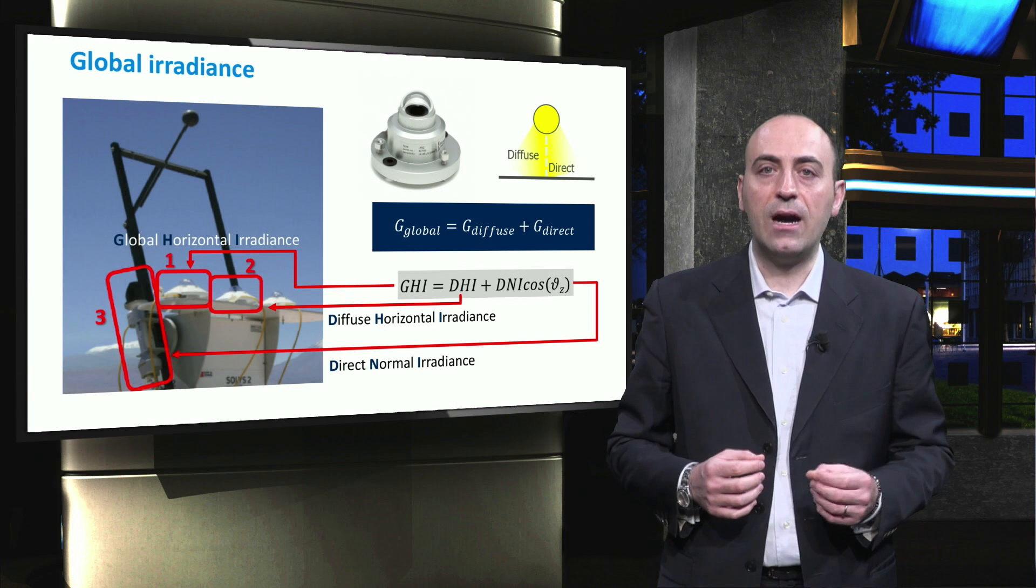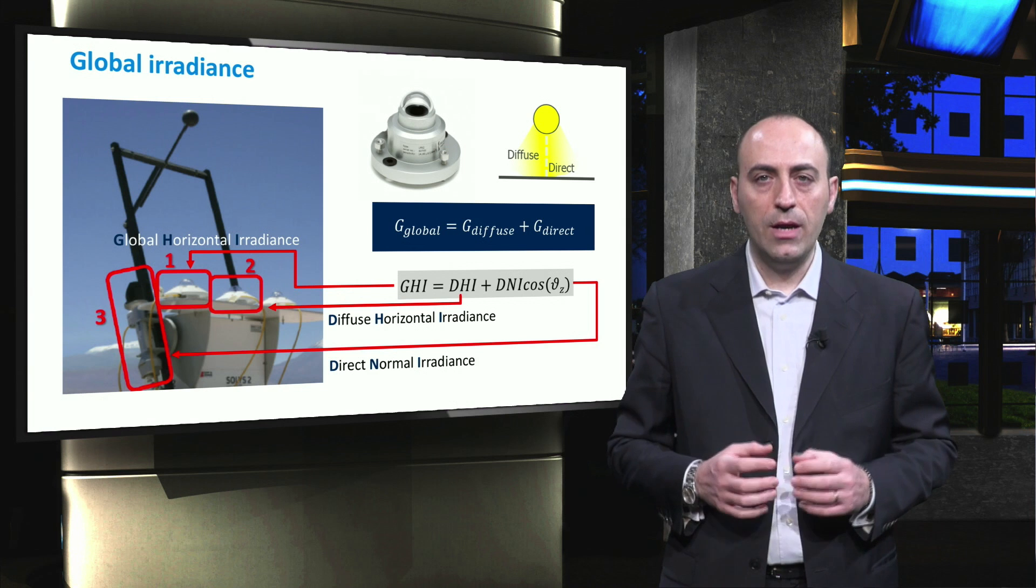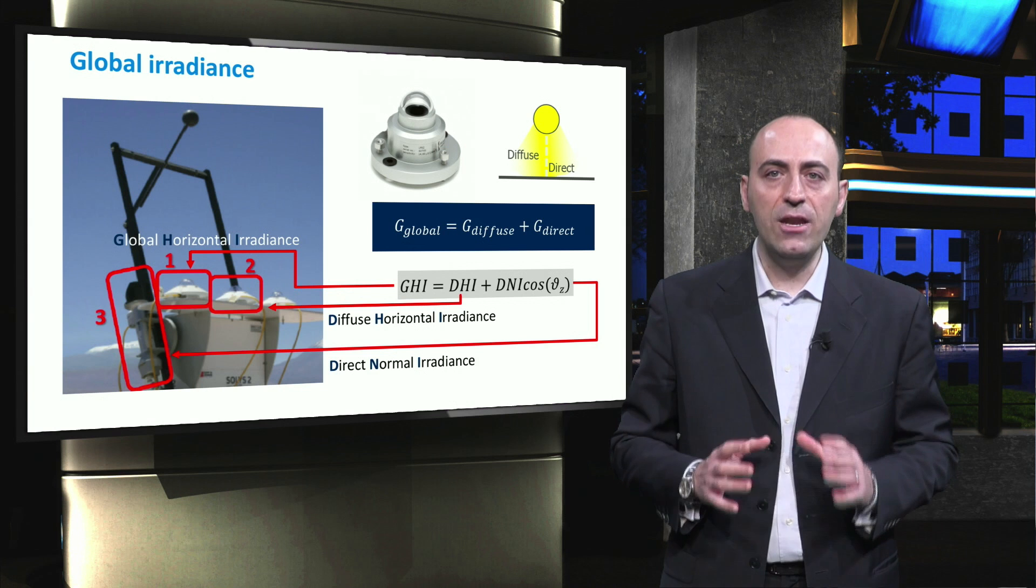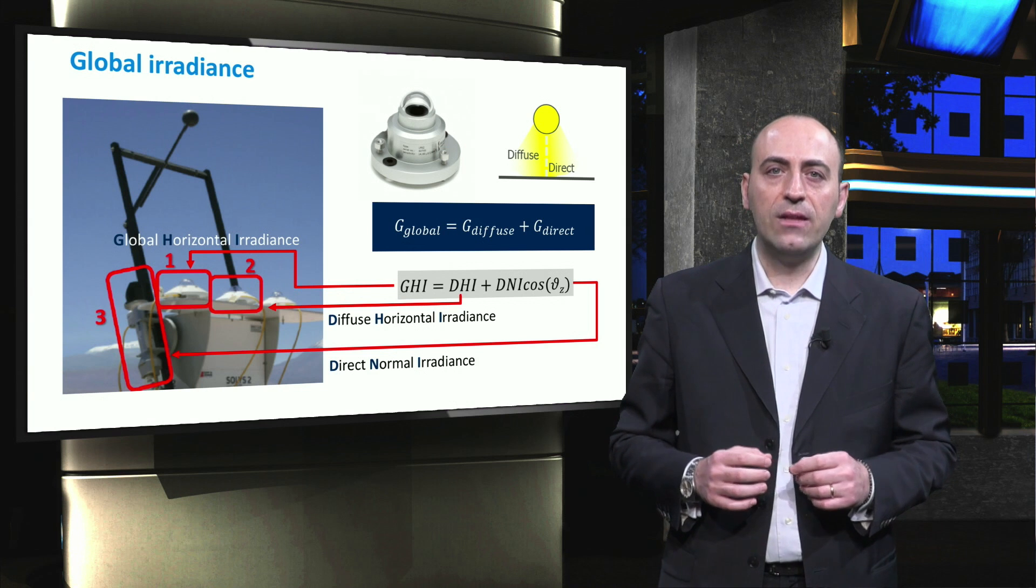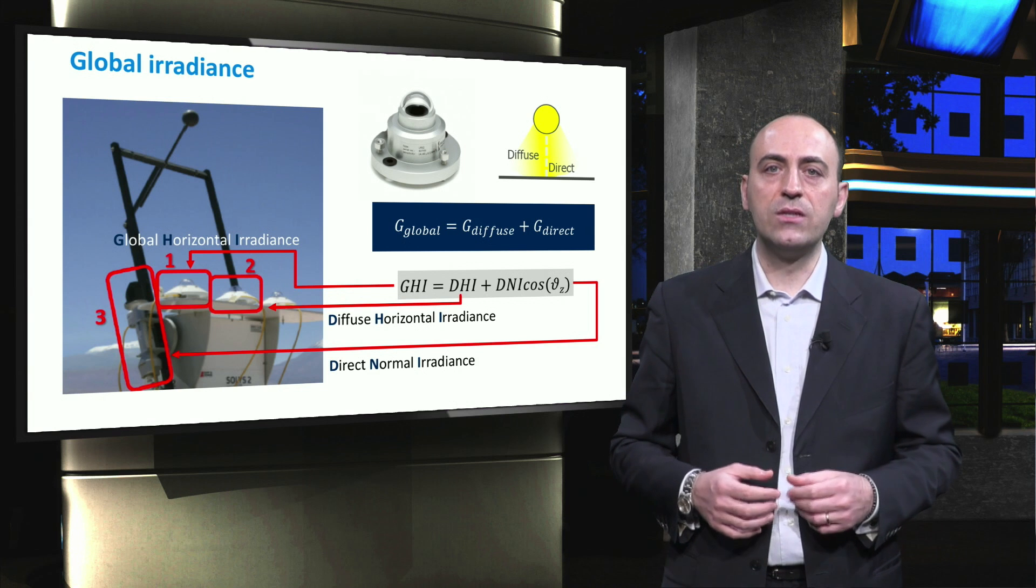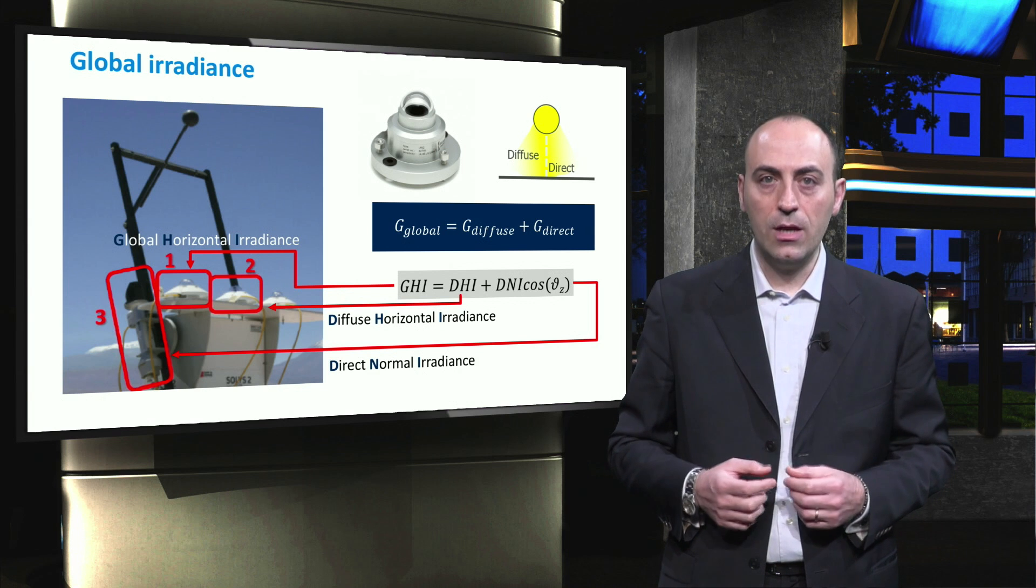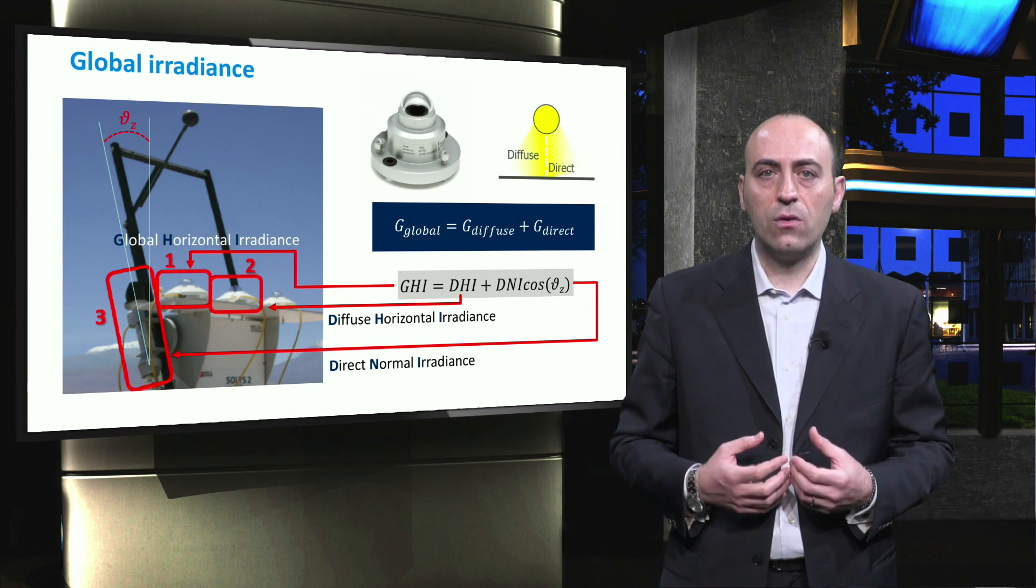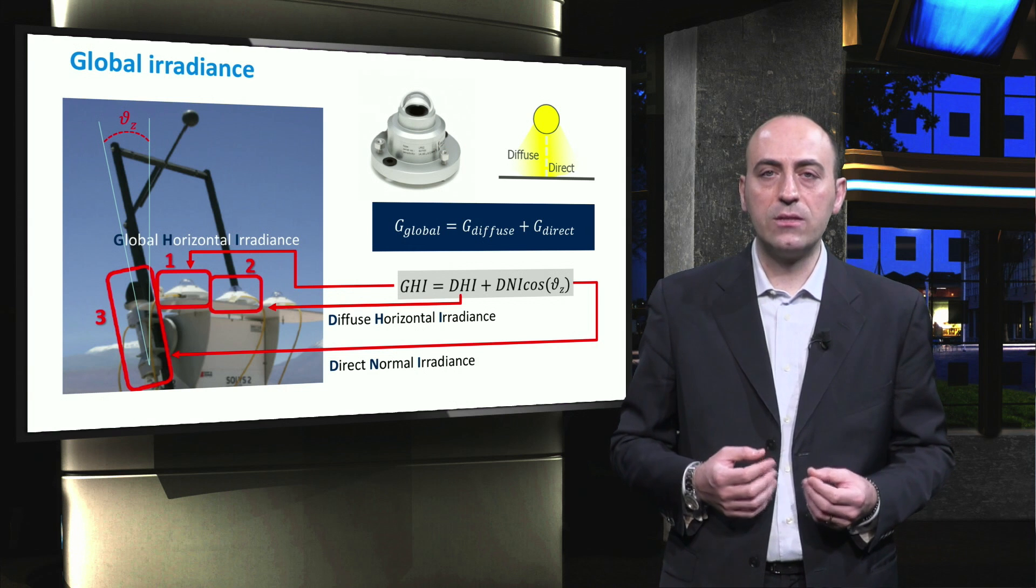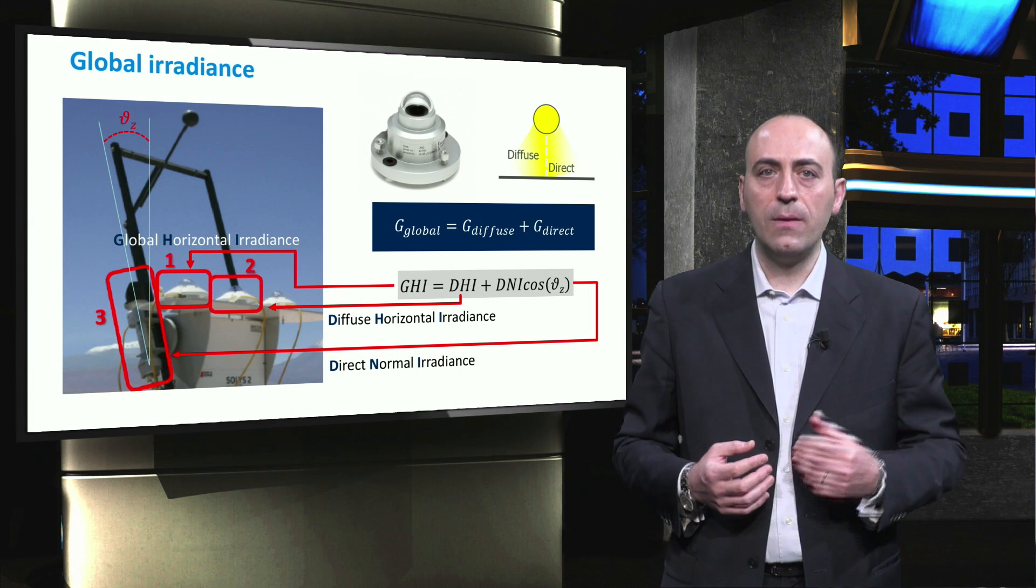Finally, the DNI is measured with the pyranometer highlighted in the red box number 3. It is mounted on a two-axis mechanical stage that follows the sun at any moment of the day, and it always points towards its direct component. The direct normal irradiance is thus obtained by shielding the pyranometer in a black tube. In order to obtain the direct component on a horizontal surface, we have to multiply the direct normal irradiance by the cosine of theta z, which is the angle between the zenith and the sun position.